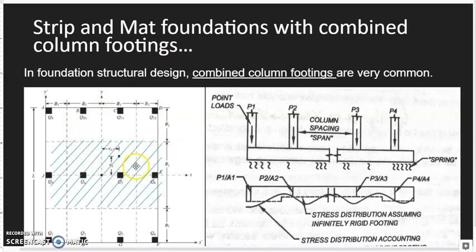Here is an example of combined column footing or mat foundation cut section. You will see different footing rigidity will result in different soil stress distribution. For a very rigid foundation, or if it's infinitely rigid, then its soil stress distribution will be a uniform weight.